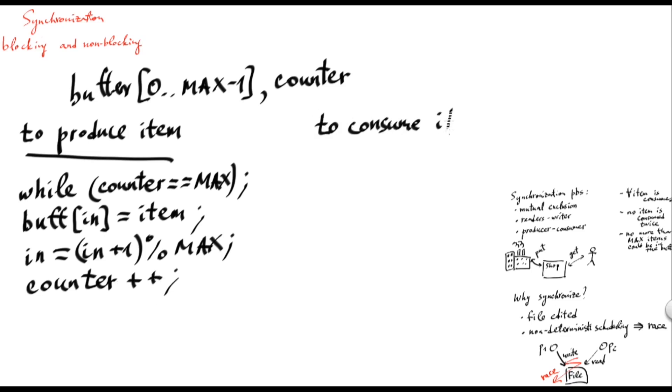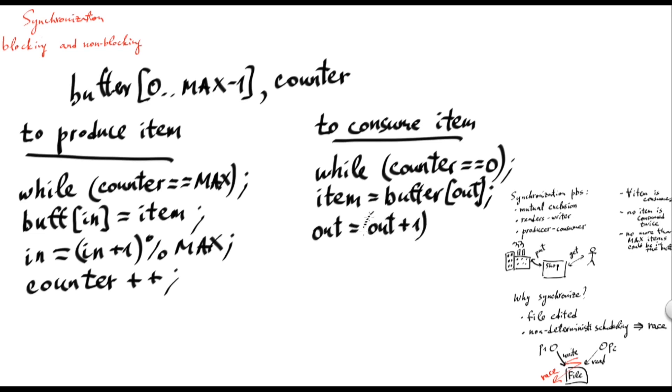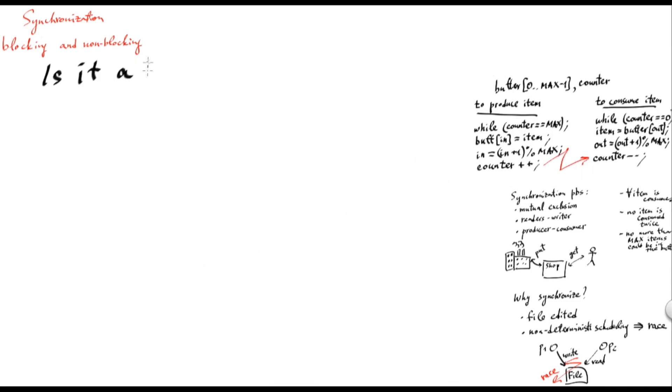Well, symmetrically, to consume an item from the buffer, we would wait until there is something in the buffer. Then we would take an element out of it using some local variable out. And of course, we need to increment the out to keep up with the consumer, again modulo max. And finally, we decrement the counter because we took one element from it. And you can immediately see that there is, potentially, there is a race, because both producer and consumer, under some concurrent scenarios, may access concurrently the shared variable counter. So, is it really a problem?